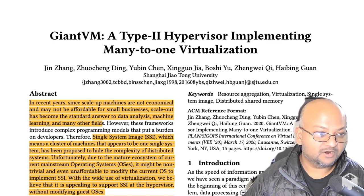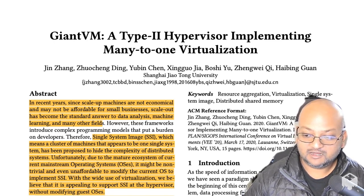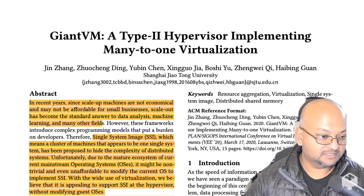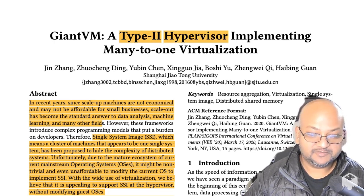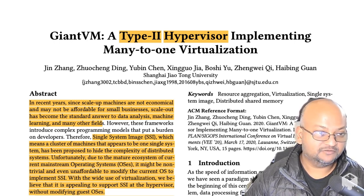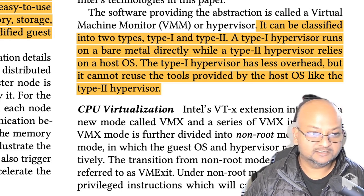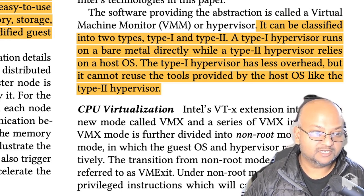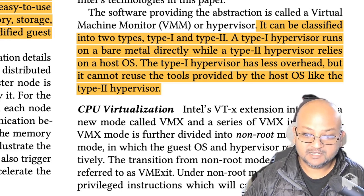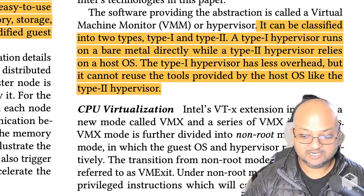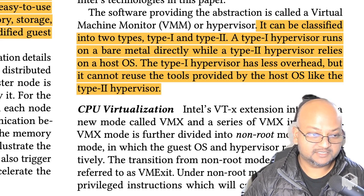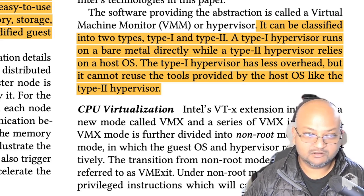The paper was published back in March of 2020 in the Conference on Virtual Execution Environments. The title mentions that Giant VM is a type 2 hypervisor. A type 1 hypervisor is one that runs directly on the bare metal and does not need support from an operating system, as opposed to a type 2 hypervisor which runs on top of a host operating system and typically utilizes some of the underlying multiplexing and protection mechanisms offered by the host operating system.